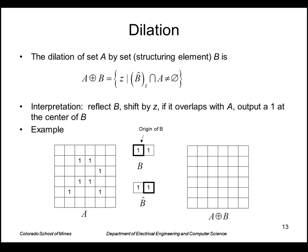Okay, let's look at the opposite of erosion, which is dilation. The dilation of a set A by a structuring element B is defined this way. It says that we want all points Z such that we take the reflected B, offset it by Z, and if that intersects A at all—in other words, the intersection is not empty—then that point is in the dilation. So effectively, we reflect B, we shift it by Z. If it overlaps at all with A, we output a 1 at the center of B.